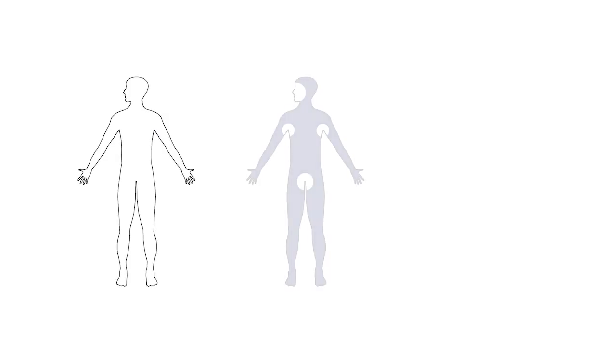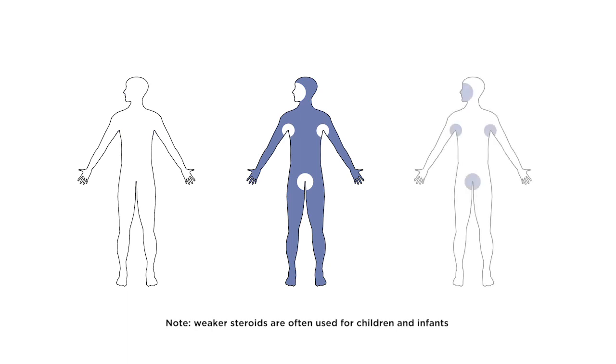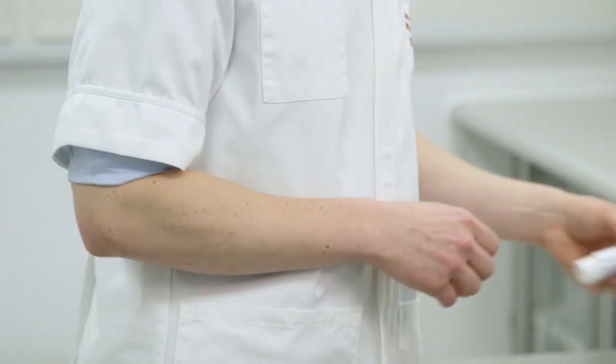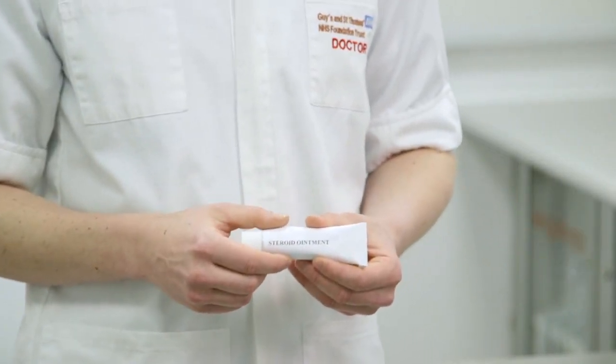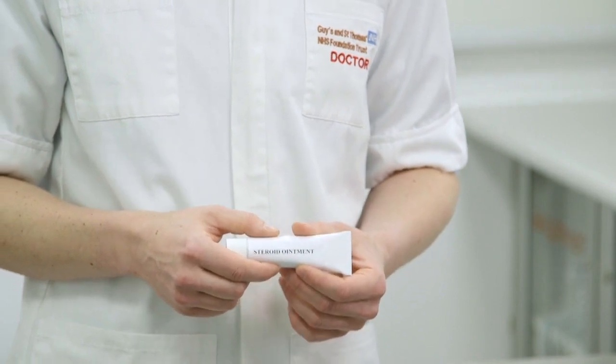It is important to remember that topical steroids come in different strengths. Stronger steroids tend to be used on the body, whilst weaker steroids are used on the face and skin folds. They come as ointments or creams. Steroid ointments are oilier and are therefore better for treating drier skin.